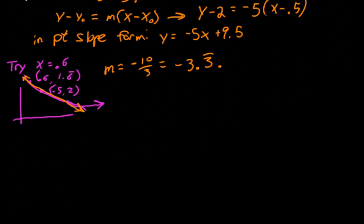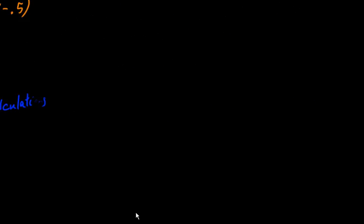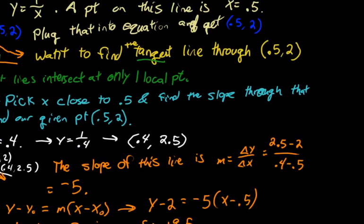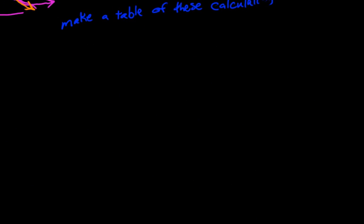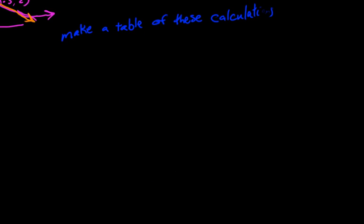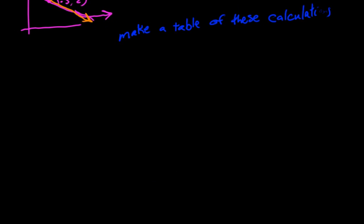So we can just keep trying numbers closer and closer to 0.5. And we can make a table of these calculations. Actually, let's move. Whoa, that's not where I want to move. And we'll just do it here. I can't find a better place to do it.